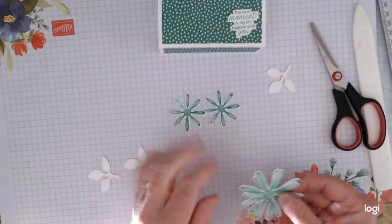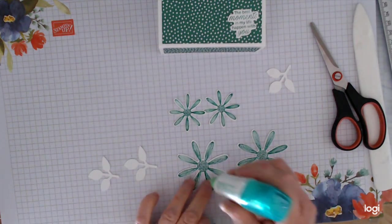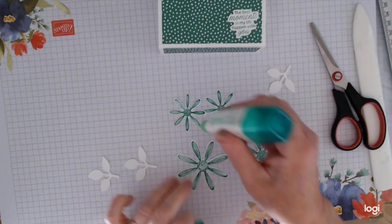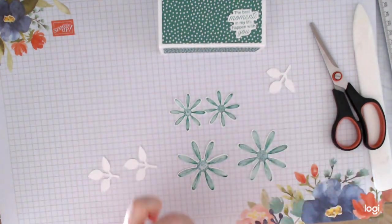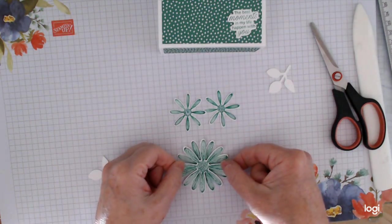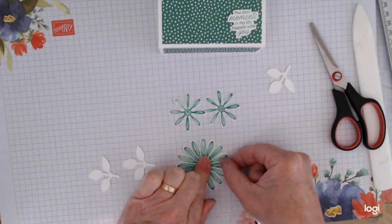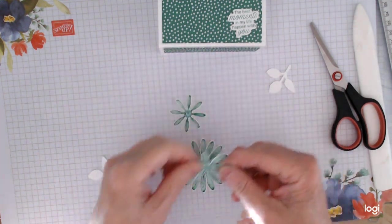That's a great little punch too. I treated myself to that a while ago and it's been worth its weight in gold if you just want to add plain little leaves without stamping them. So now we need to glue our flowers together. A bit of glue in the center of one of each.